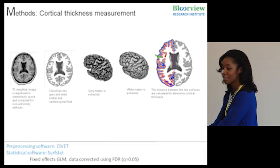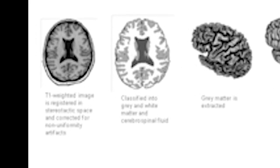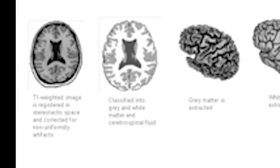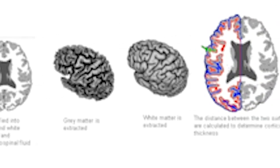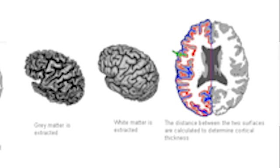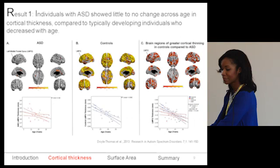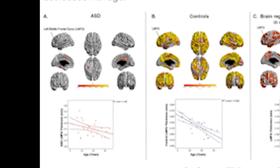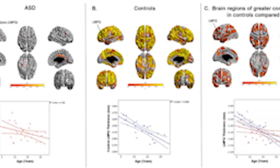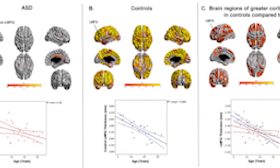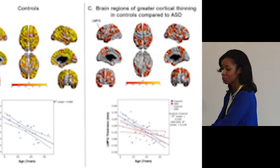For cortical thickness measurements, we took the T1-weighted image, classified it into gray and white matter, extracted the gray and white matter surfaces, and calculated the distance between these two surfaces to determine cortical thickness. In the results, column A shows within-group analysis for ASD participants, column B shows controls within-group analysis, and column C shows between-group results.